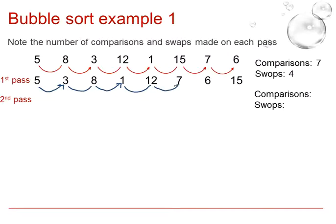Comparing the 12 with the 7 will be a swap and then the 12 with the 6 will be a swap. We will have made 1, 2, 3, 4, 5, 6 comparisons, in other words the arrows, and 1, 2, 3, 4 swaps.